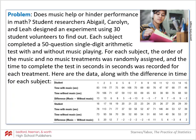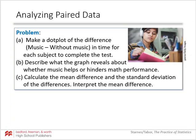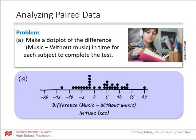For each subject, the order of the music and no-music treatments was randomly assigned and the time to complete the task in seconds was recorded. Here is our data including the difference. We want to take a look at the difference — does it take more time to complete this arithmetic task with or without music? We calculate the difference as music minus without music, and we make a dot plot.